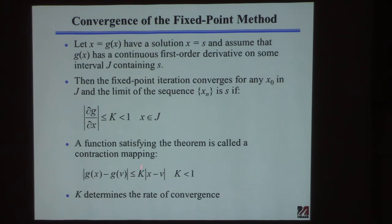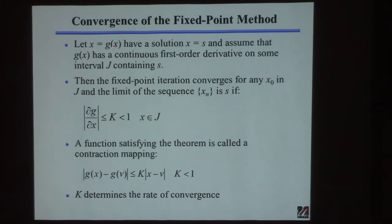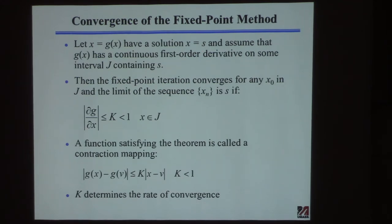This is an example of what a theorem about the fixed-point algorithm looks like. It says: let x equals g(x) — that's the fixed-point type equation. Assume it has a fixed point, a solution x equals s. In other words, assume the problem has a solution. That's not very limiting — if it doesn't have a solution, you can't expect the algorithm to work.